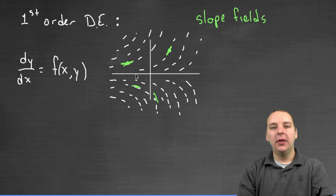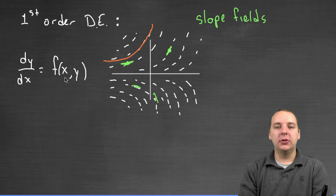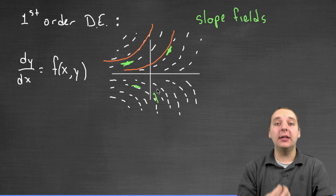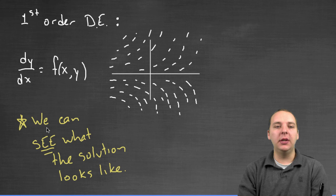There's certain curves that would be solutions, and you can kind of see them, they're the ones who, for lack of a better word, flow nicely, flow nicely through the slope field. So you can see, this would be a solution to the differential equation. This would be a solution to the differential equation. Typically there are lots of solutions to a given differential equation.